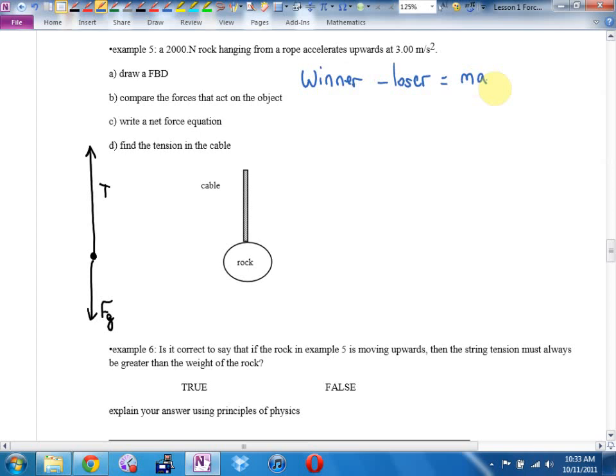Who's winning? Tension. So anything in the tension direction, anything pointing up is going to be positive. Winner. Minus. Who's losing? Loser. That equals ma. A said draw free body diagram. B said compare the forces that act on the object. We actually did that in our free body diagram with our arrow lengths. C says write a net force equation. There's our answer to part C. There's our net force equation.